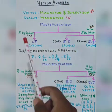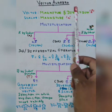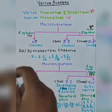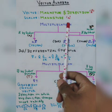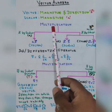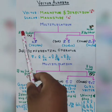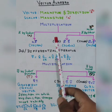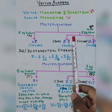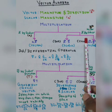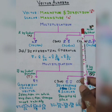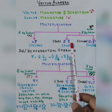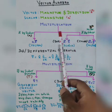When any object has a magnitude as well as a direction, it is known as a vector. When any object has only magnitude, it is known as a scalar. There are three types of multiplication we use in vector algebra. When a vector is multiplied by a scalar quantity, the result is a vector. When a vector is multiplied by another vector, it is either a dot or cross product. The cross product is known as a vector and the dot product is known as a scalar.